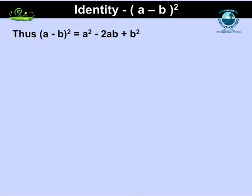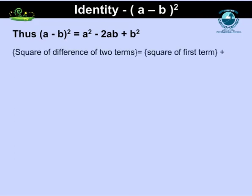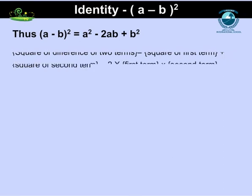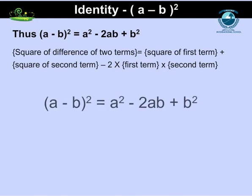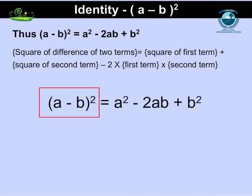So, we can say that the square of the difference of two terms equals the square of the first term plus the square of the second term minus 2 times the product of the first and second terms. Clearly, this is an identity since the right-hand side is obtained from the left-hand side by actual multiplication.